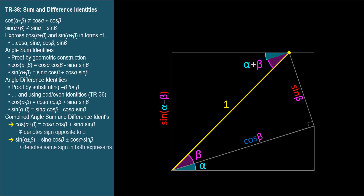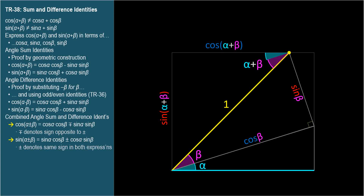And this side adjacent is cosine(alpha plus beta). This side at the bottom, adjacent to alpha, is cosine alpha times the hypotenuse, which is cosine beta — so cosine alpha times cosine beta. This section on the right, opposite alpha, is sine alpha times the hypotenuse, so sine alpha times cosine beta.